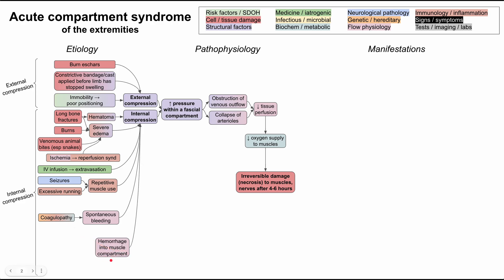Hemorrhage into muscle compartments is another etiology. Most causes are traumatic: gunshots and stab wounds can rupture an artery causing bleeding into the compartment. An iatrogenic cause is radial artery perforation, which can cause significant hemorrhage into the arm — this typically occurs after a cardiac procedure using the radial artery for intravascular stenting. A crush injury or deep tissue injury can also cause hemorrhage into the muscle compartment without being a penetrating injury.